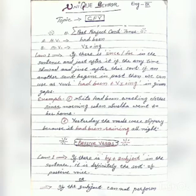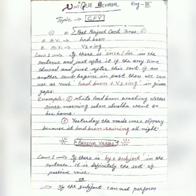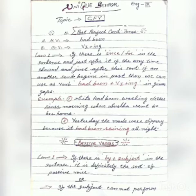The auxiliary main verb is the first form of the verb plus '-ing'. Rule number one: if there is 'since' or 'for' in the sentence, and just after it any time is shown, and another sentence begins in the past, then we use 'had been' plus verb first plus '-ing' in the given gaps.